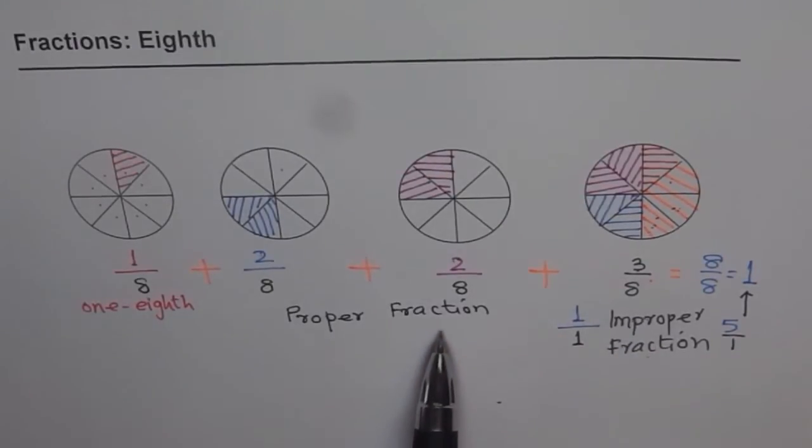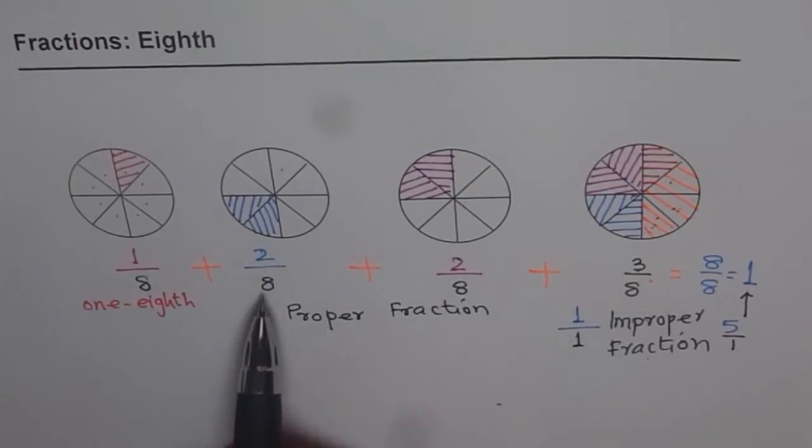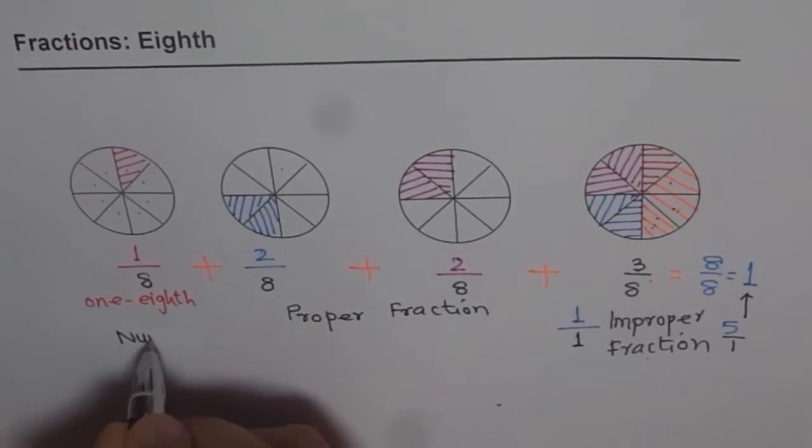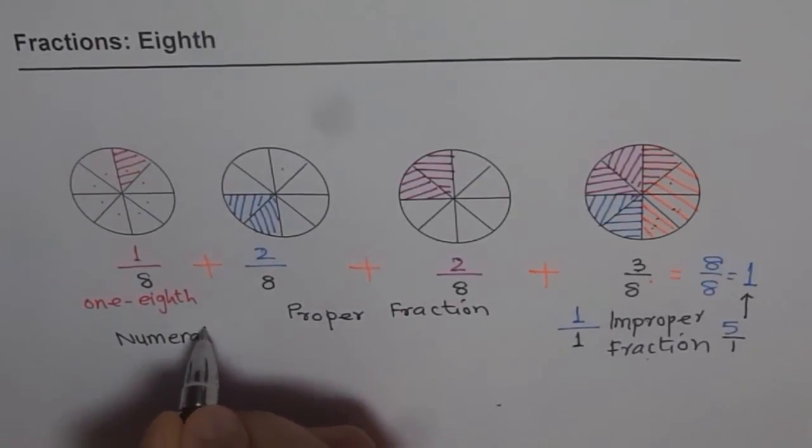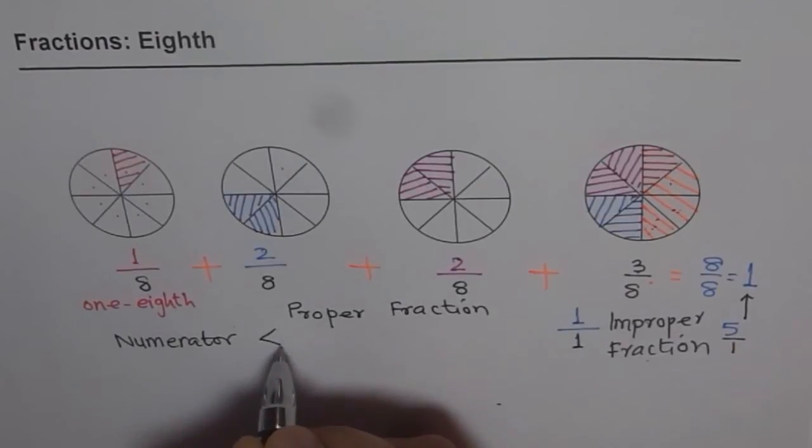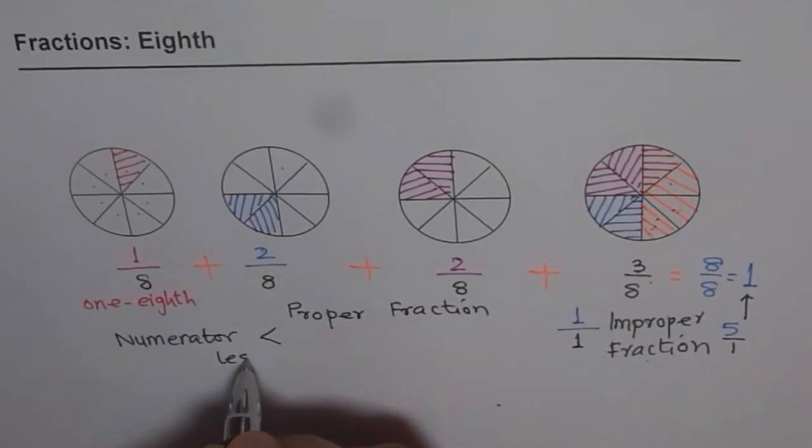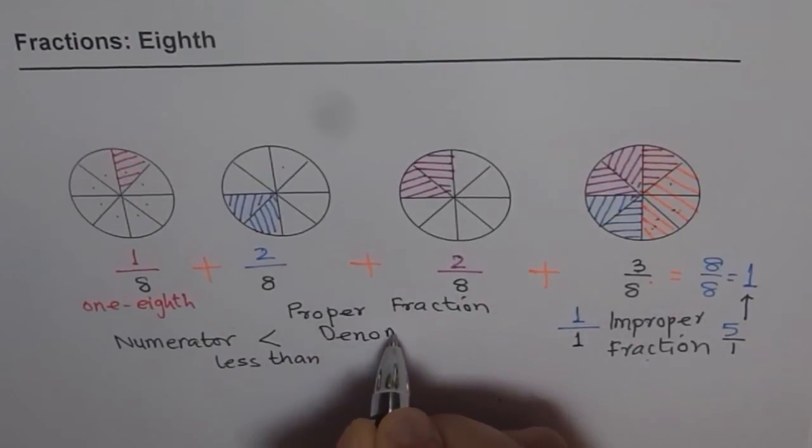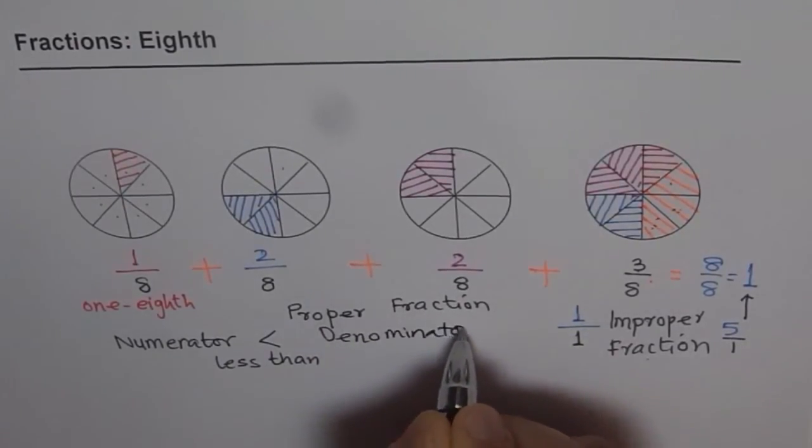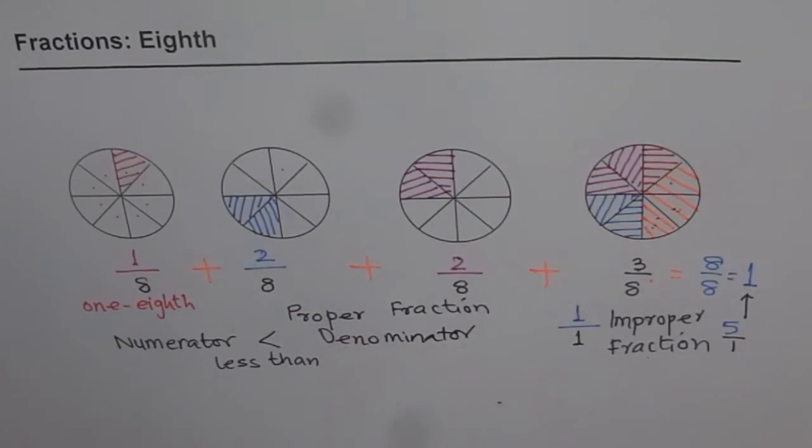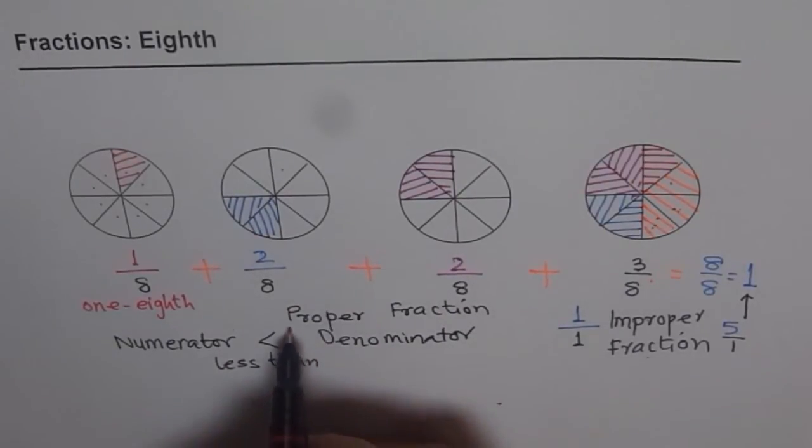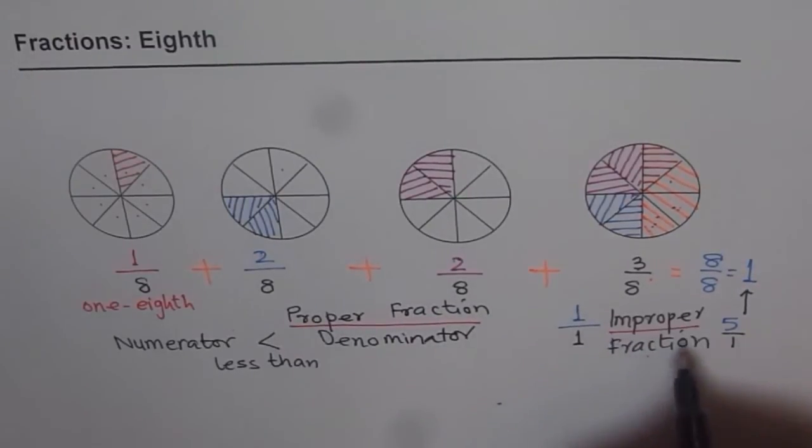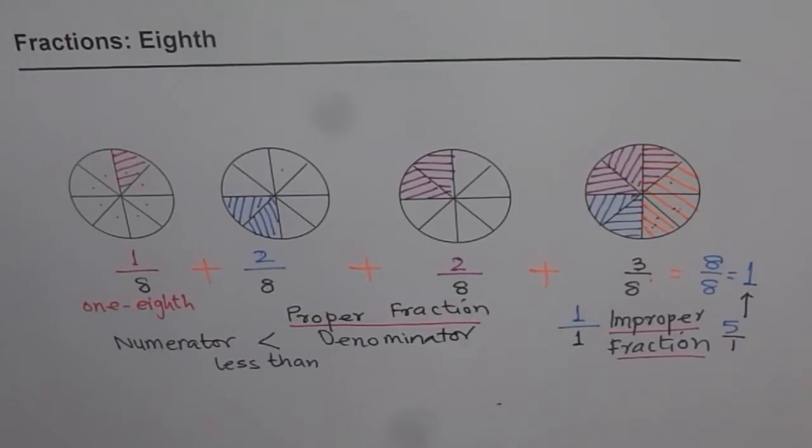Proper fractions are those fractions where numerator is less than denominator. So let us write down here. So numerator is less than, that is the sign for less than, is less than denominator. So if numerator is less than denominator, then what do we have? We have proper fractions. Otherwise, it is improper fractions.